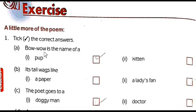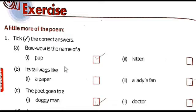Bow-wow is the name of a — Option 1: pup. Option 2: kitten. It is the name of pup. The poet Edward Oxenford has named his pup 'Bow-wow.' Tick the right mark to the first one — that is pup.